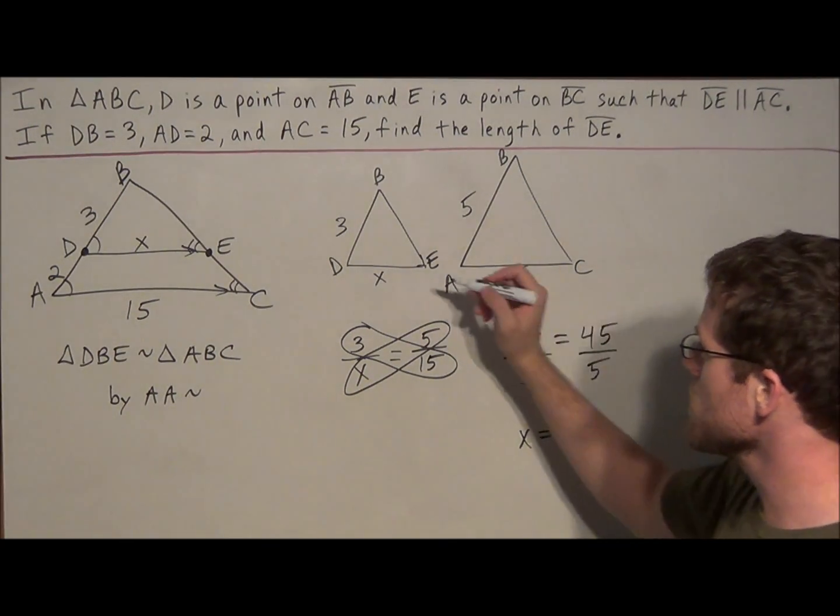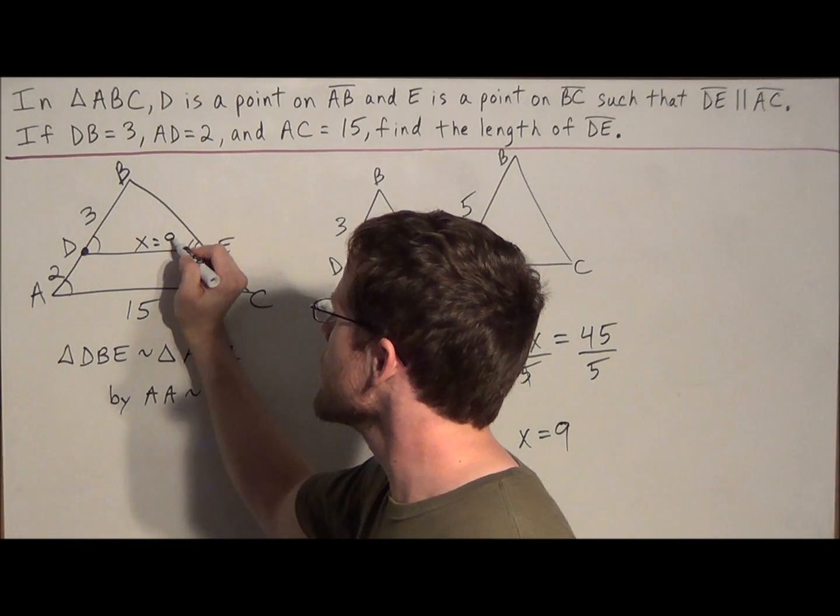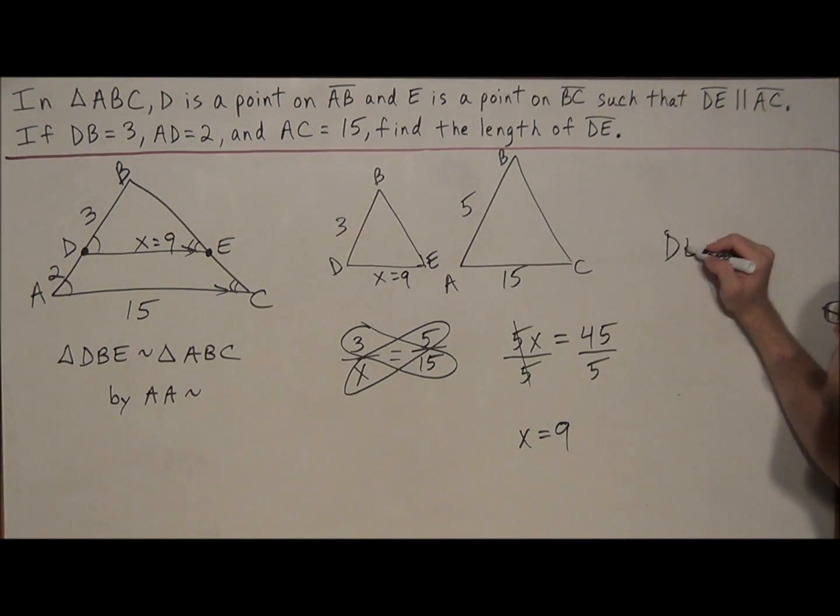So if we want to answer this problem formally, we know that these two sides equal 9, but we'll just write it out. The length of DE, we'll say that DE is equal to 9.